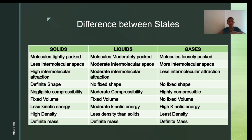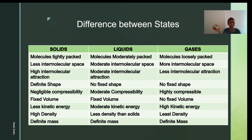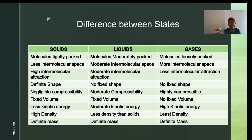Solids have a definite shape that cannot be compressed or changed — with exceptions like clay. Liquids do not have a definite shape; they take the shape of their container. Gases also have no fixed shape. For compressibility: solids have negligible compressibility, liquids have moderate compressibility, and gases are highly compressible.